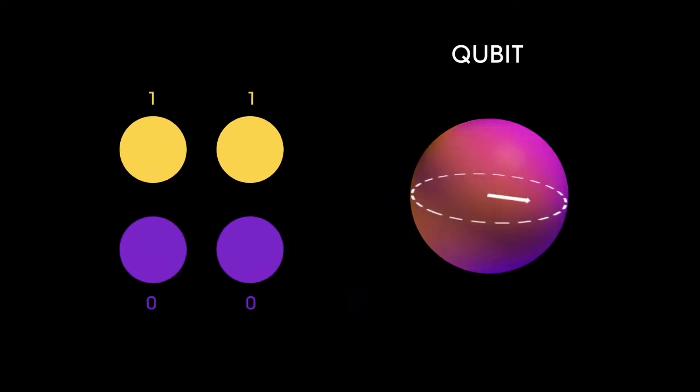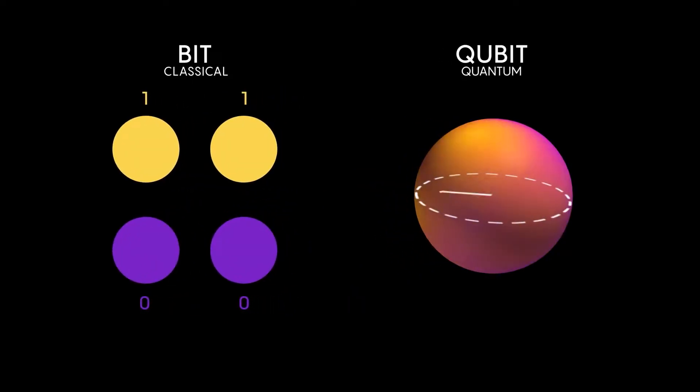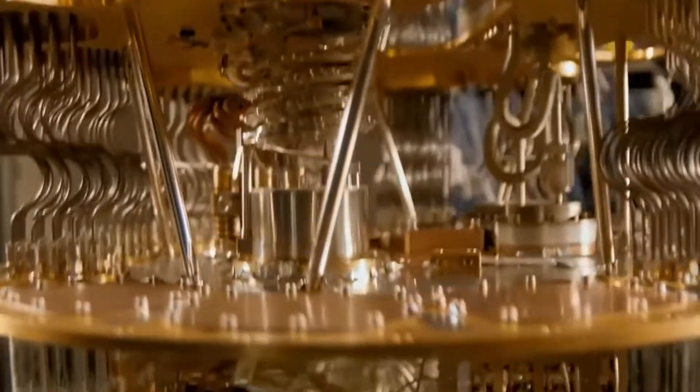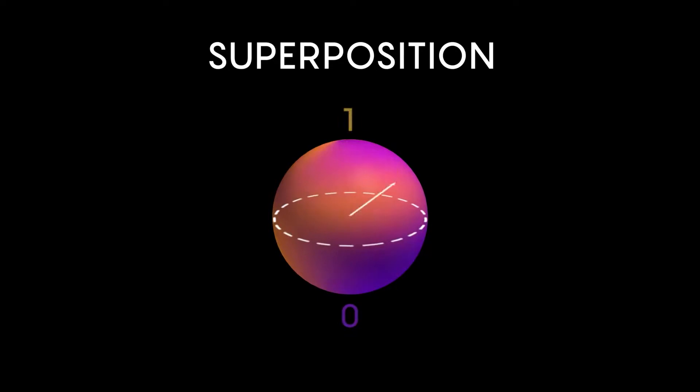A qubit is a two-state unit of data processing, somewhat similar to the binary code used by most computers. However, quantum computers superimpose qubits with quantum mechanical processing. This brings about advanced computing that bridges any uncertainty.